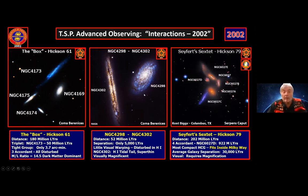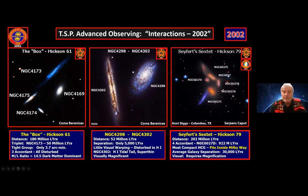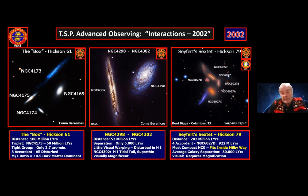NGC 4298 and 4302 are in Coma Berenices at a distance of 52 million light years, part of the Virgo galaxy cluster, separated by only 5,000 light years. Visually there's no apparent distortion, but in hydrogen-21cm emission they're sharing material between them — the northern part of 4302 has a tidal tail shooting out the top. Fireworks are happening, but not in visual light. All three of these objects are beautiful to observe. Seyfert's Sextet is quite small — the total diameter is only about 100,000 light years, essentially the size of our own Milky Way. You can fit all those galaxies inside our galaxy.